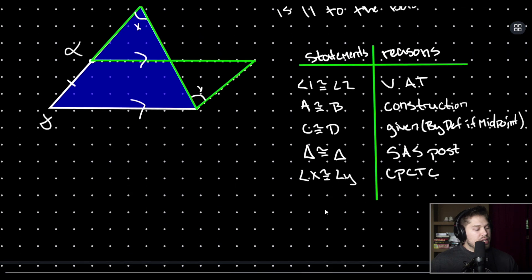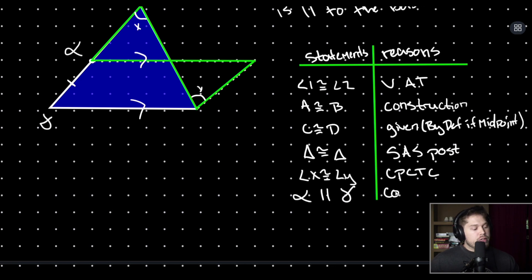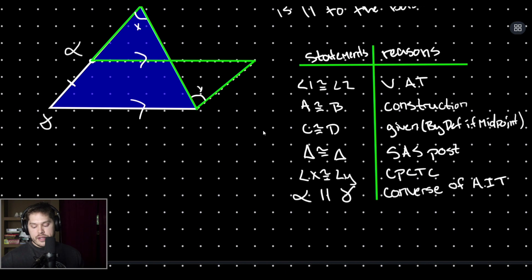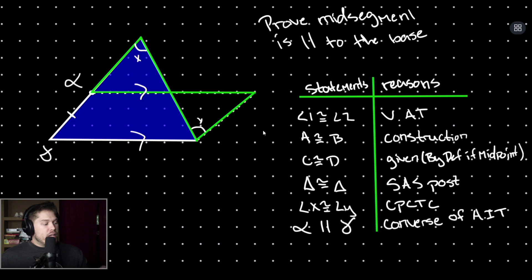Because angle x and angle y are congruent, we can say that line alpha is parallel to line gamma by the converse of the alternate interior angles theorem. So we just proved that line alpha and line gamma are parallel. We did it by constructing a length equal to our mid-segment, proving the green triangles are congruent, and then applying the converse of the alternate interior angles theorem.